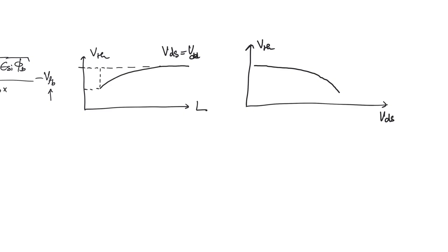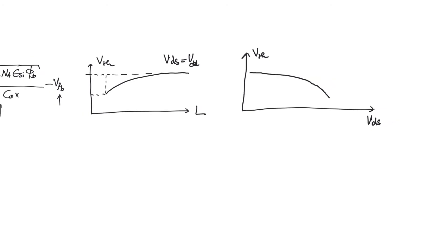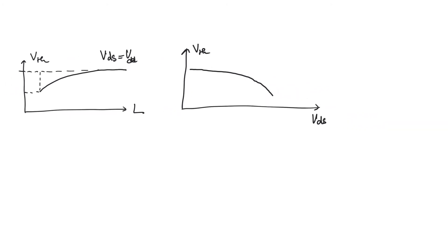The reason we noticed this when plotting V_threshold versus channel length is because this phenomenon — which also exists for long-channel transistors — only manifests when V_ds is very large. For a large-channel transistor, V_threshold is pretty much constant, and you might notice some dependence only at very high V_ds values — so high, in fact, that they exceed normal operating potentials and even exceed breakdown potentials. So this effect was not noticeable in long-channel transistors, but is very significant in short-channel transistors.